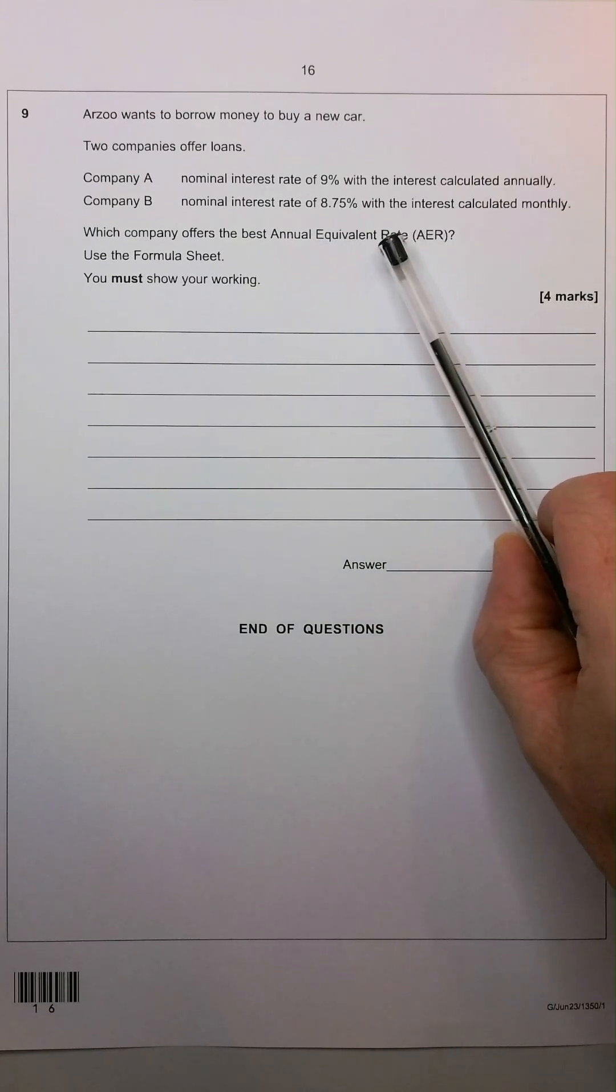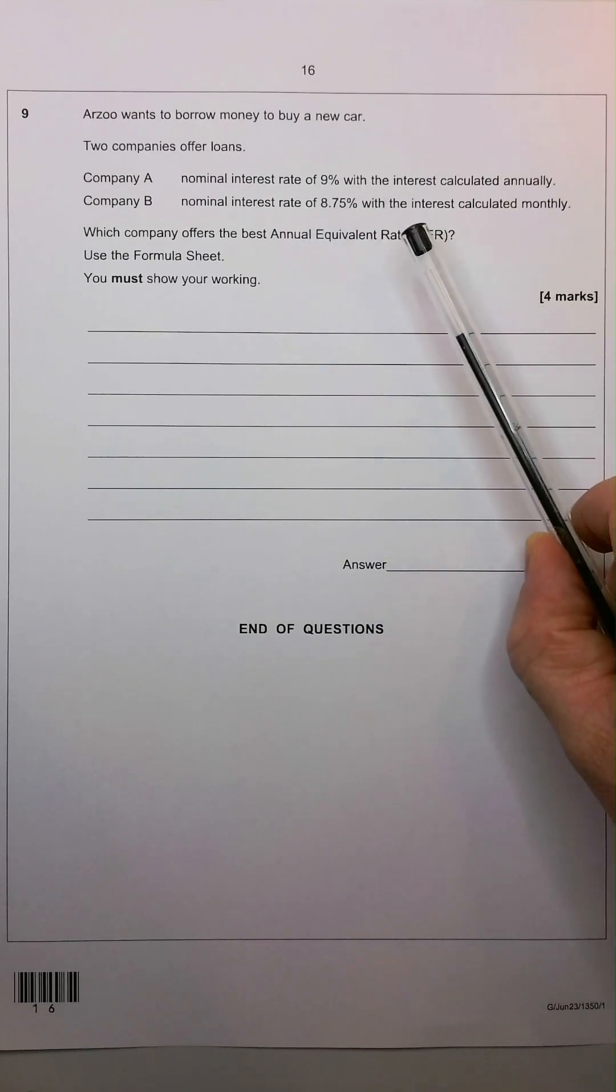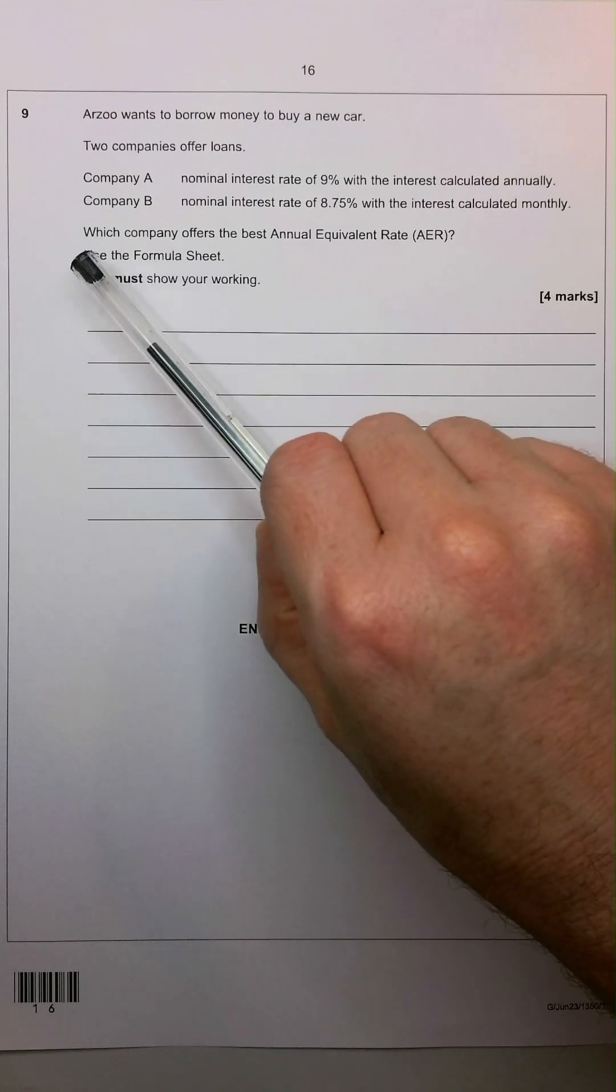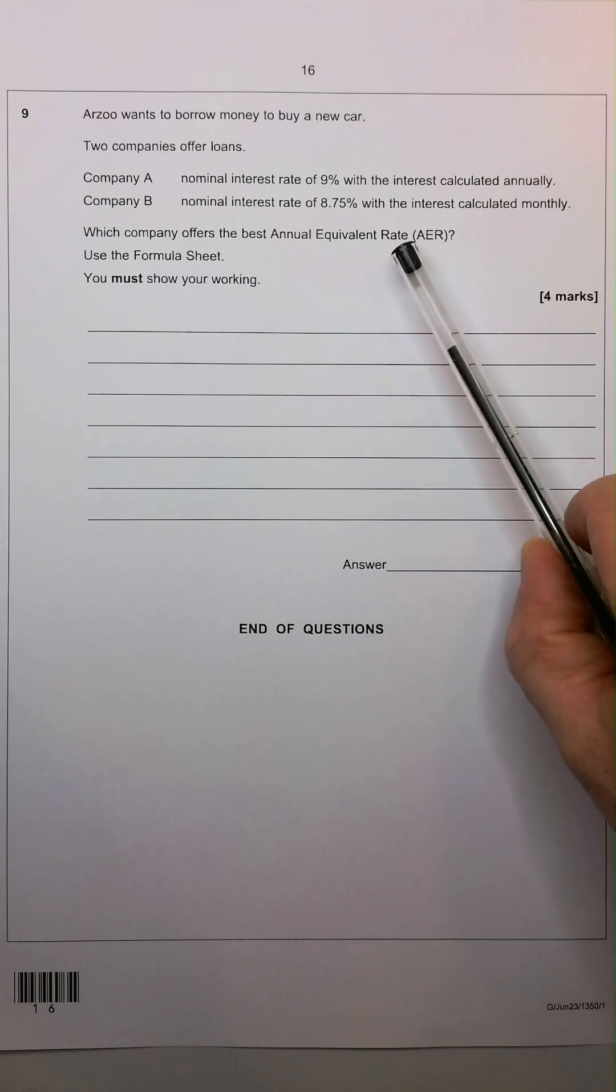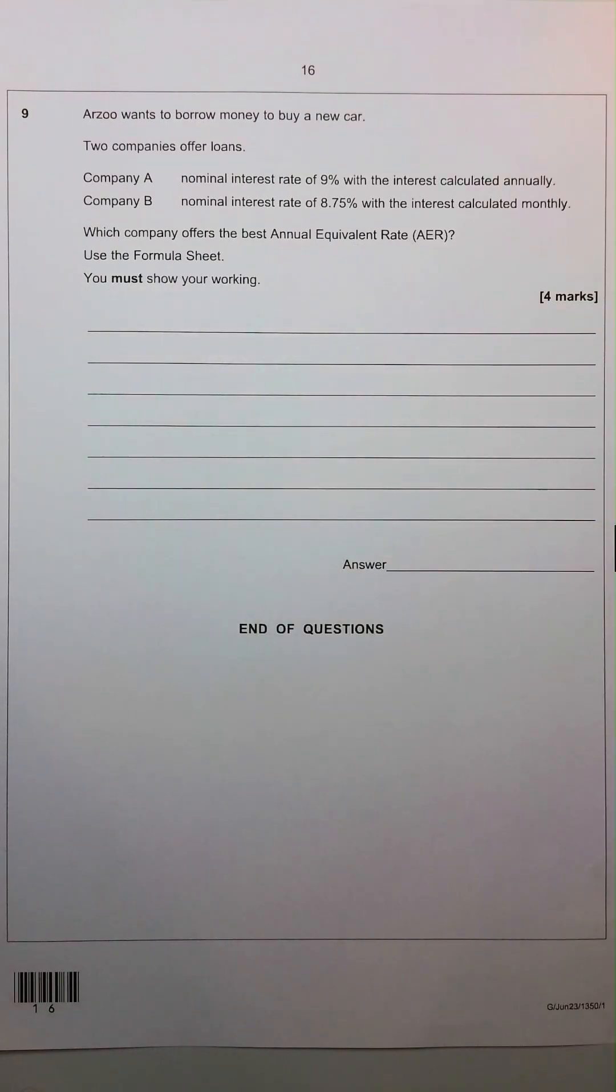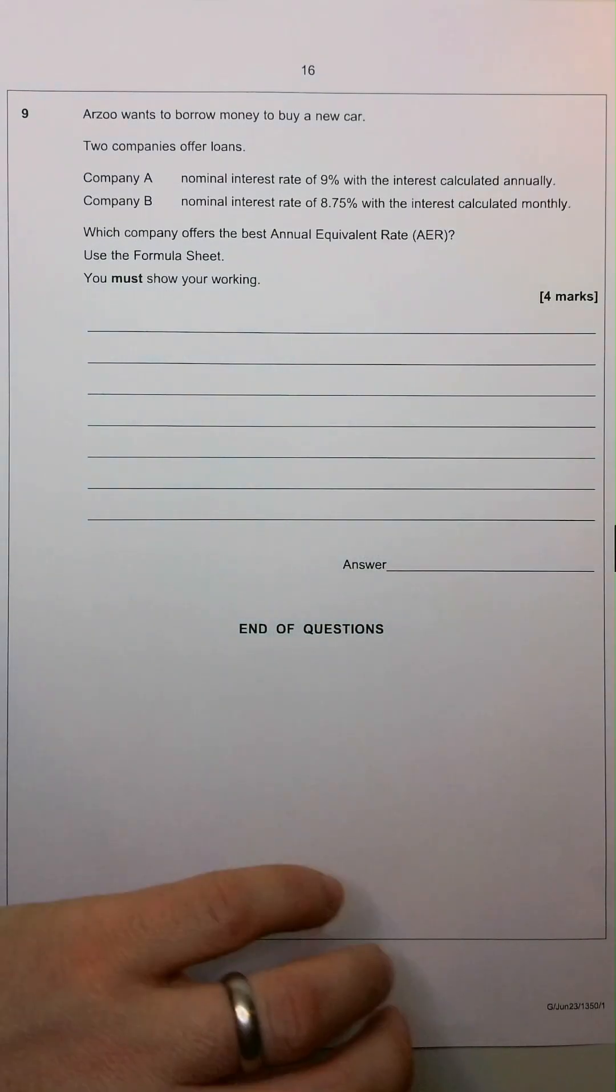Now at face value, you need to instantly assume that 8.75% is of course lower than 9%. However, the question asks which company offers the best AER, or Annual Equivalent Rate. We should use the formula sheet, which has been provided for you, and we must show our working.